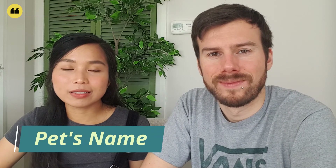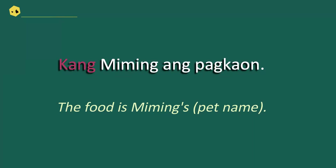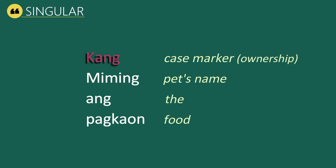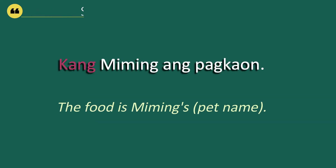The third category is pet's names. Our first example is: Kang Miming ang pagkaon, meaning 'The food is Miming's.' Kang is our case marker, always placed before the noun. Miming is the pet's name, ang means 'the,' and pagkaon means food. Kang Miming ang pagkaon — the food is Miming's.